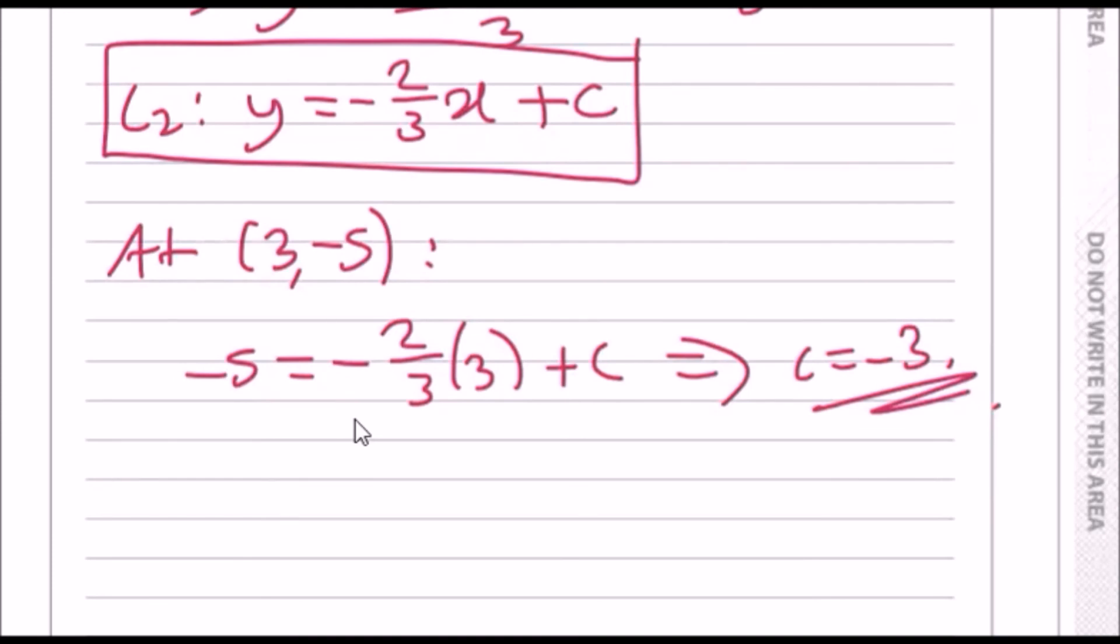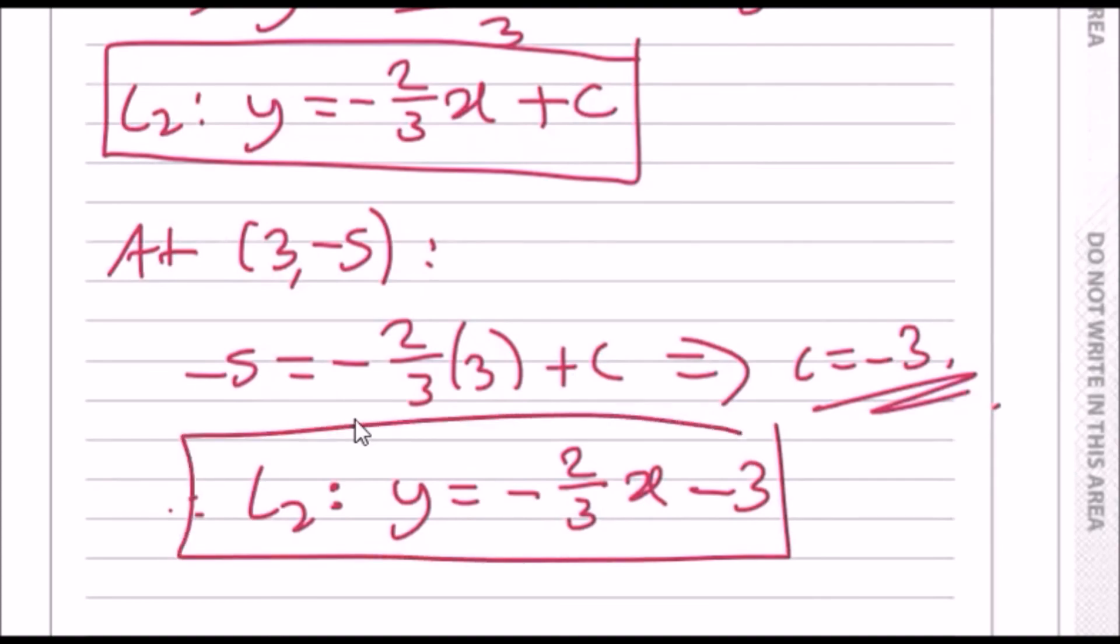Therefore, the final l2 equation is going to be y equals minus 2 over 3x minus 3, same gradient, and that is what they want.